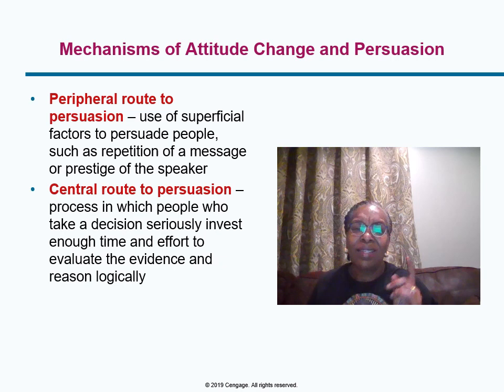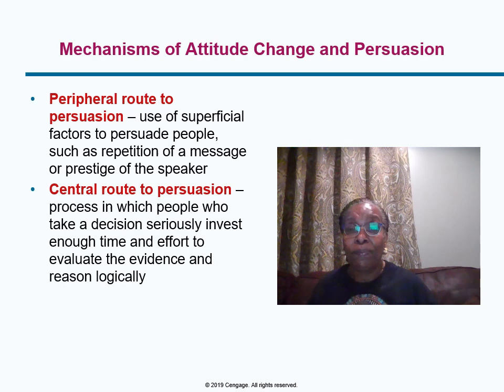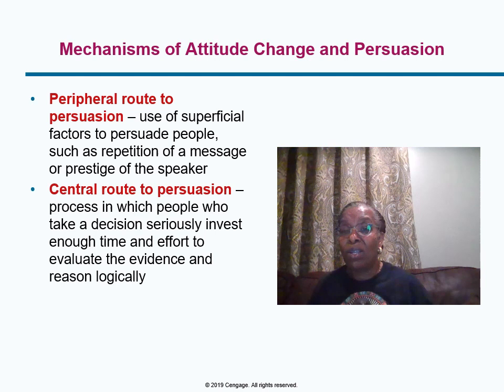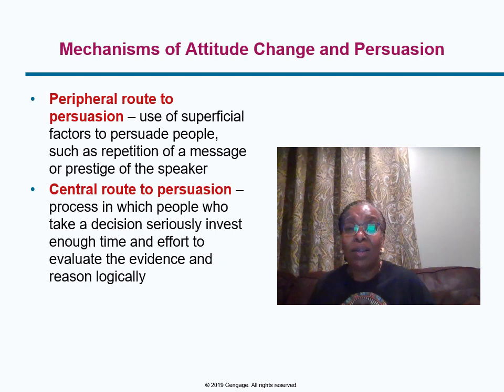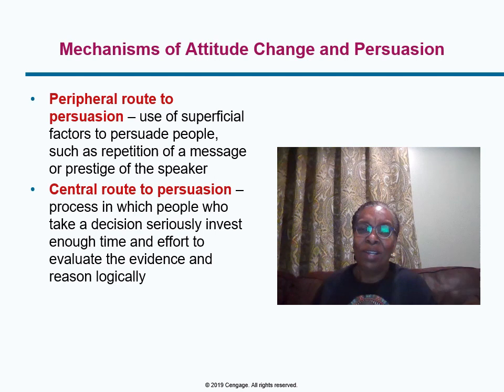The central route to persuasion requires investing enough time and effort to evaluate evidence and reason logically about a decision. Your emotions can still enter the process, but only if relevant. Think of buying a new home — you carefully evaluate the quality of the house, check the price, look into the neighborhood, and dig for more information. You might be in a better mood when viewing one house due to nicer weather, but you generally don't let that irrelevant emotion dominate the decision.